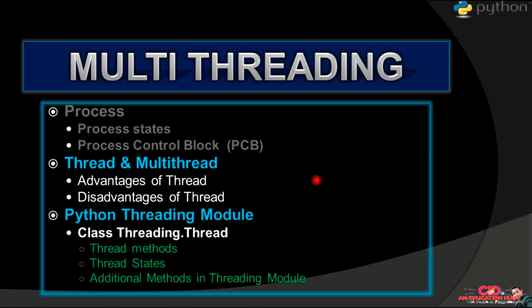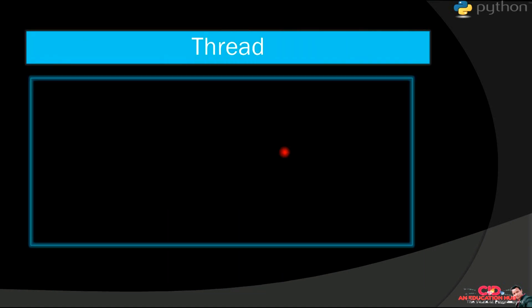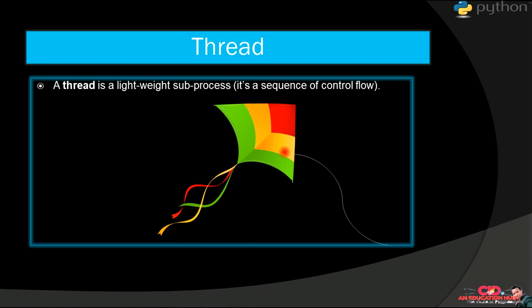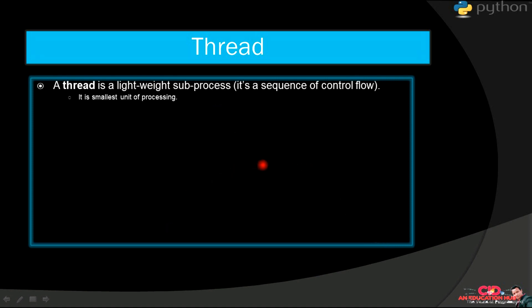In the last video we will learn about the threading module. So let's begin. What is thread? A thread is a lightweight subprocess. You can assume a thread as a part of a process. Suppose it's a kite and it can only be controlled by this one thread. No other thread can control this kite at the same time. And if it can be controlled by another thread, then this thread must be stopped. It is a smallest unit of processing.